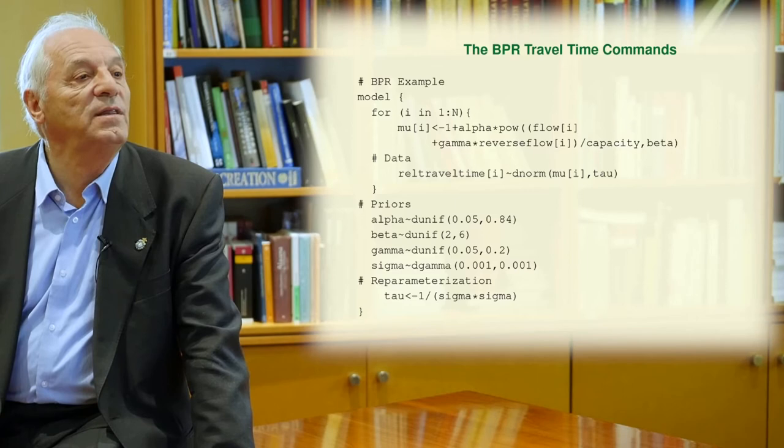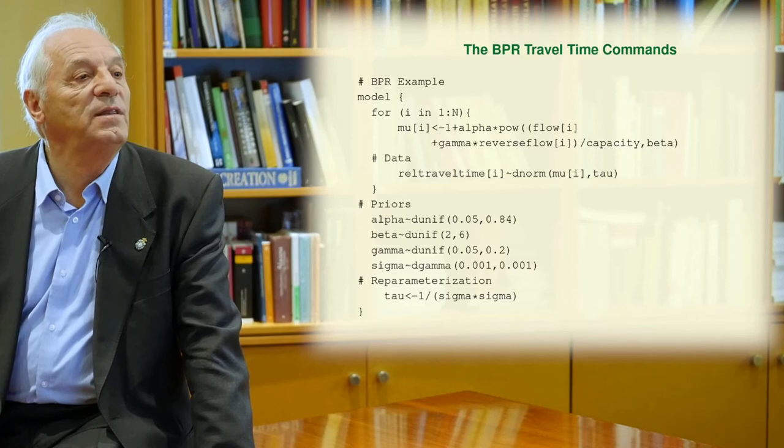Next, you need to define the priors: the alpha, beta, gamma and sigma. Then you define the first three priors as uniform densities with the corresponding parameters.